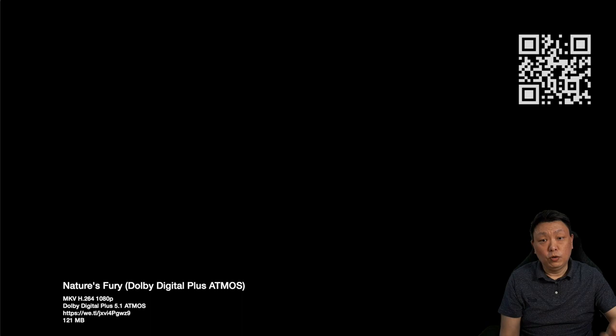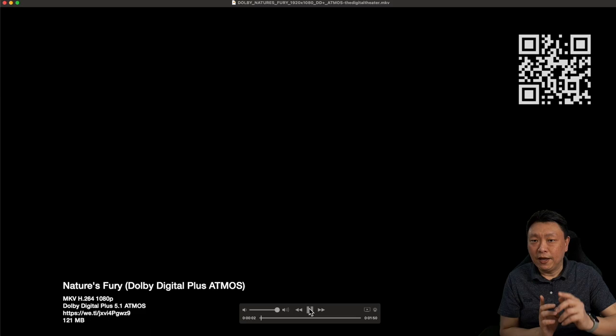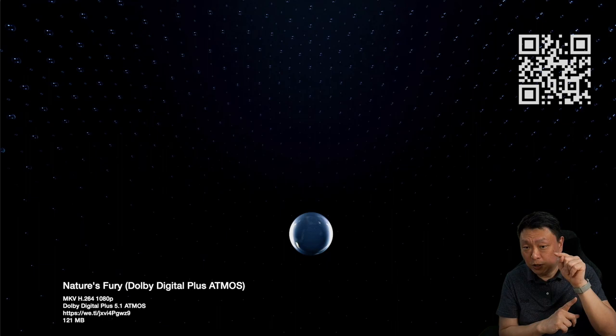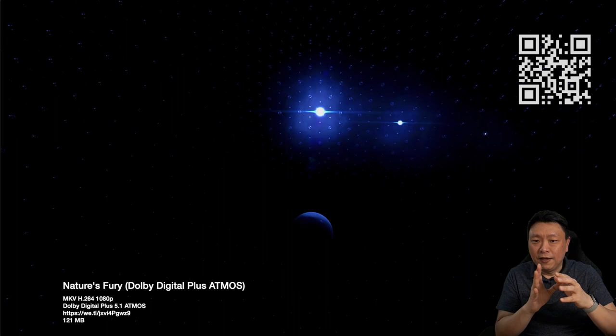Without further ado, let's go. The first file I'm going to be playing right now is the lossy format — it is Dolby Digital Plus format. I'm going to show the QR code right up here, so scan it and you'll be taken directly to the download link for this particular file. This comes in at just a hundred megabytes.